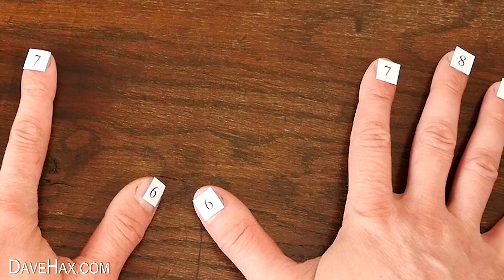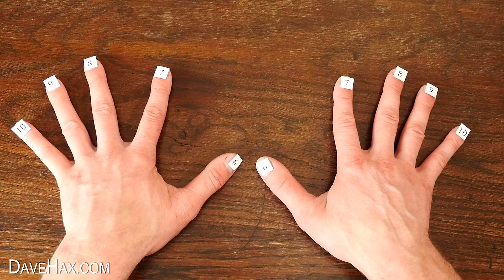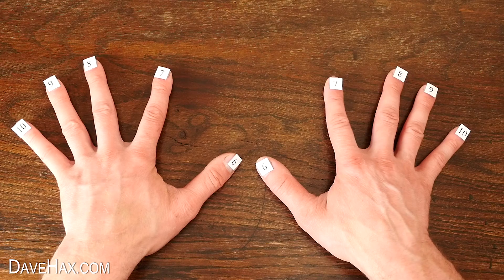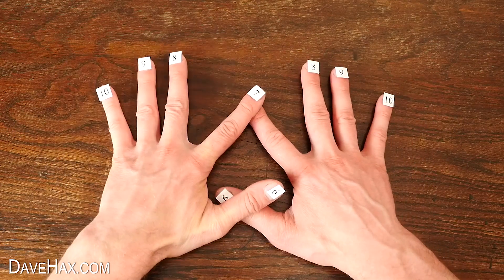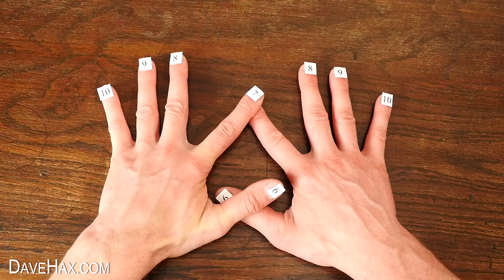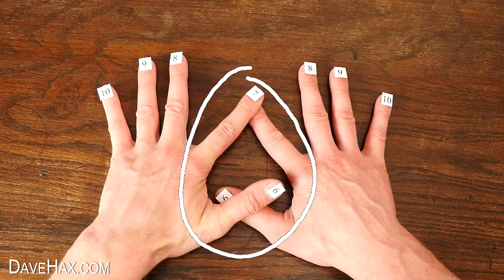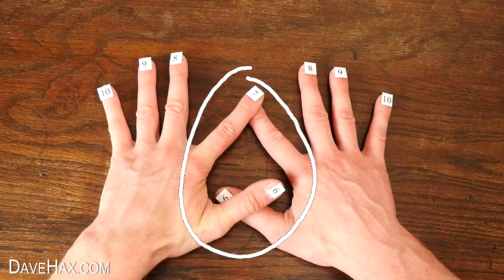So to use it, here's what to do. Let's say we want to multiply 7 by 7. We touch these two fingers together, like this, which creates two groups of digits, those which are touching here, and digits which aren't touching, those outside the circle.